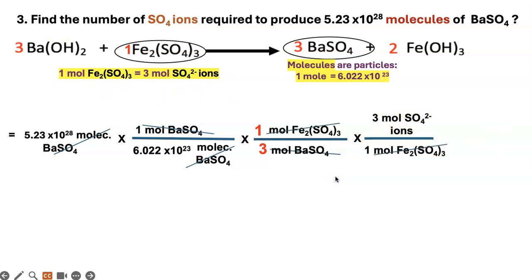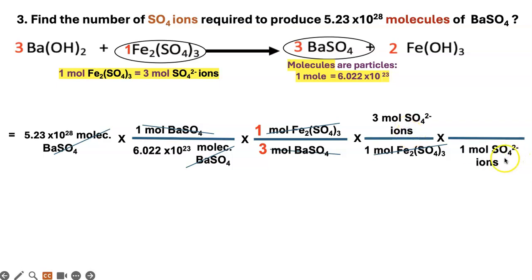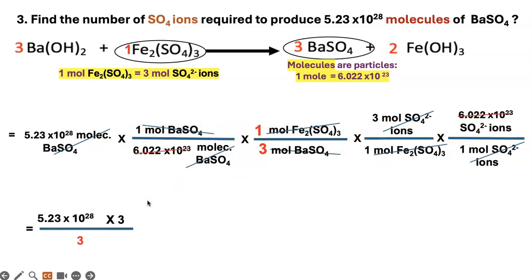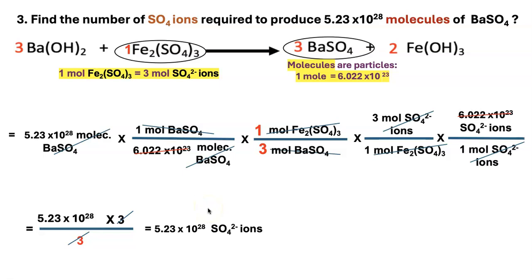With moles of FeSO₄ canceling out, you now need to convert moles of sulfate ions into individual sulfate ions. Put moles of sulfate ions in the denominator — one mole equals Avogadro's number of sulfate ions. Moles of ions cancel. This calculation has four factors. Fish out the numbers on top and bottom — the 3s cancel. Your final answer is 5.23 × 10²⁸ sulfate ions.